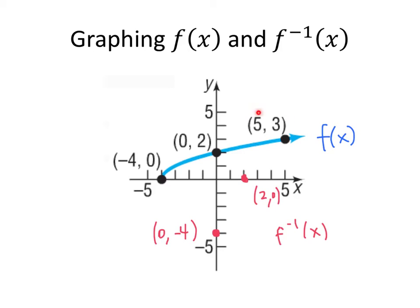On our original graph, we had 5 comma 3. So on our inverse graph, we're going to have 3 comma 5. And so the graph of our inverse function looks a little something like this.